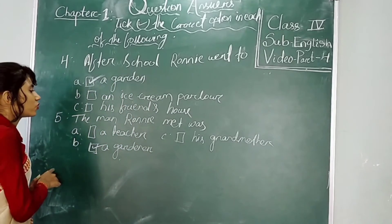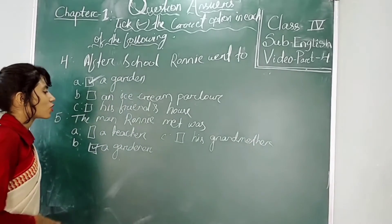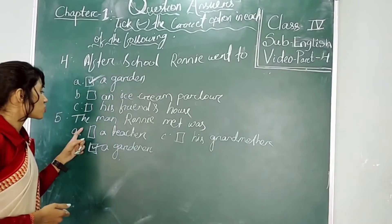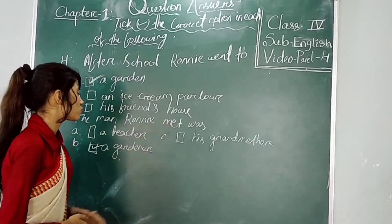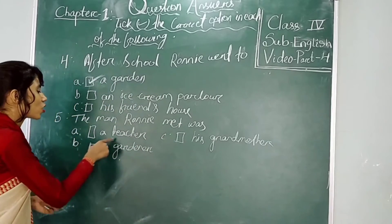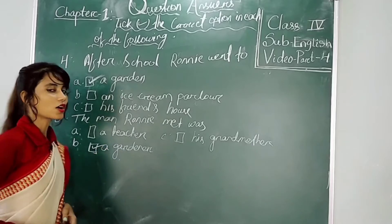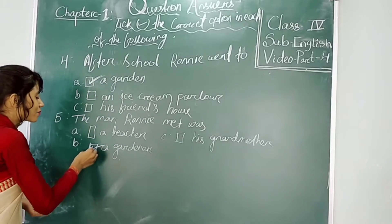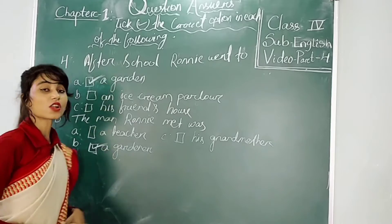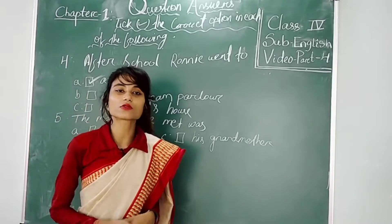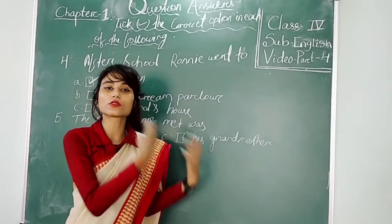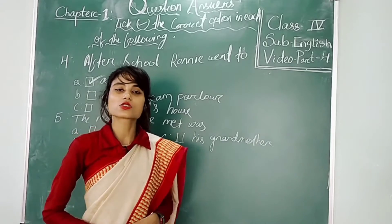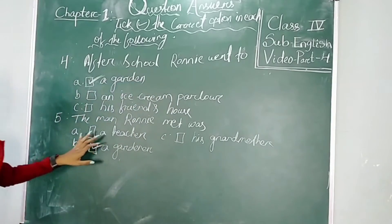Number 5 — the last question of number 1. The man running the garden was — who was the man of the garden? The answer is already on the blackboard. The answer is the Gardener, who had broken the other side of Gurjan's garden. So the Gardener is the correct option.